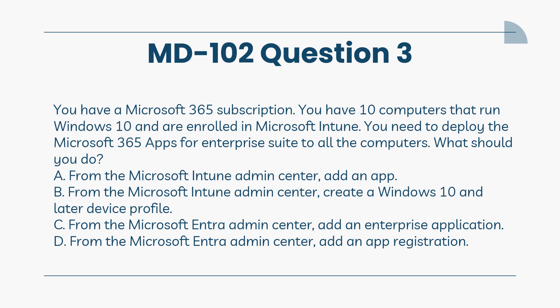You have a Microsoft 365 subscription. You have 10 computers that run Windows 10 and are enrolled in Microsoft Intune. You need to deploy the Microsoft 365 Apps for Enterprise Suite to all the computers. What should you do? A. From the Microsoft Intune Admin Center, add an app. B. From the Microsoft Intune Admin Center, create a Windows 10 and later device profile. C. From the Microsoft Intune Admin Center, add an enterprise application. D. From the Microsoft Intune Admin Center, add an app registration.